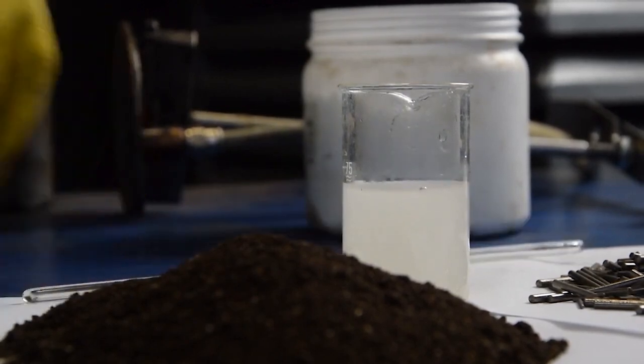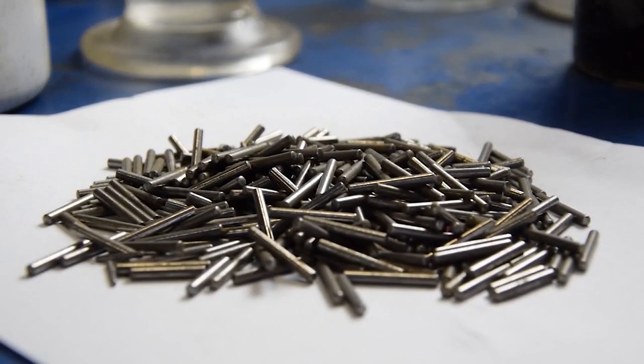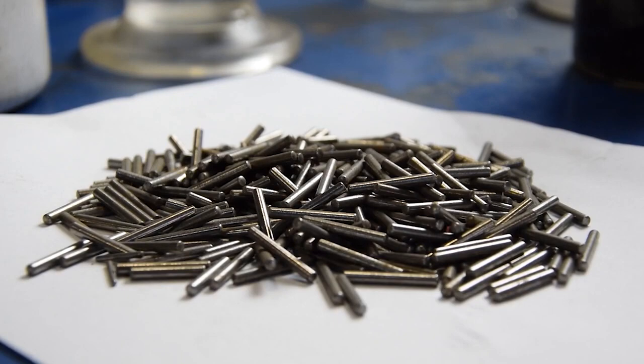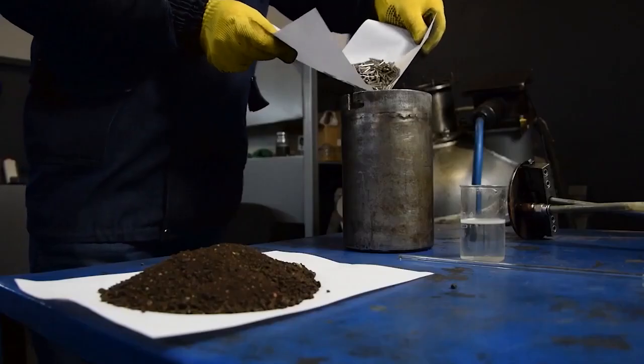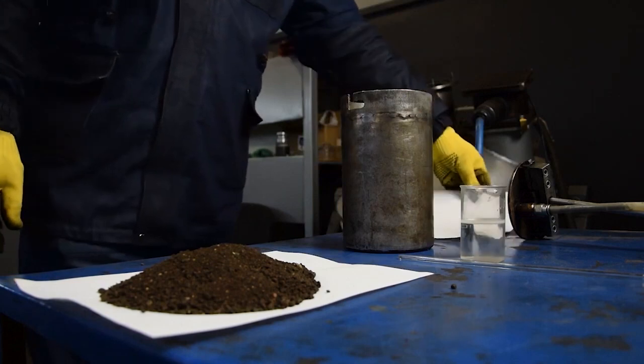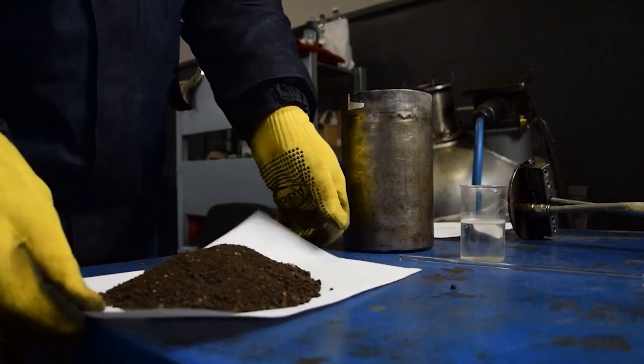The experiment was carried out on the AVS-150 vortex layer device. The working elements were steel particles with diameter of 1.5 mm and a length of 15 mm. We took 500 grams of particles to run the experiment.